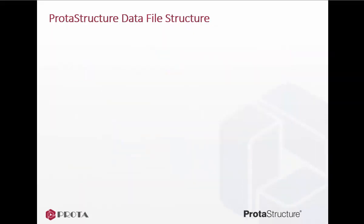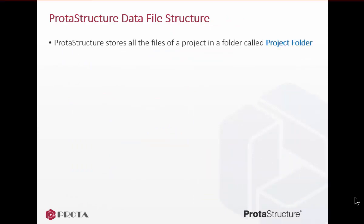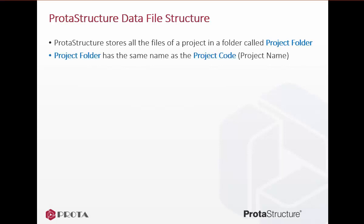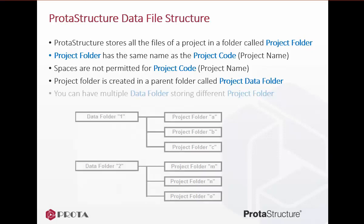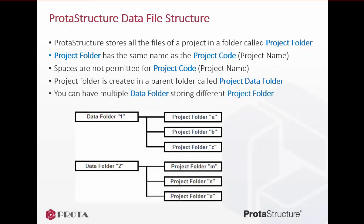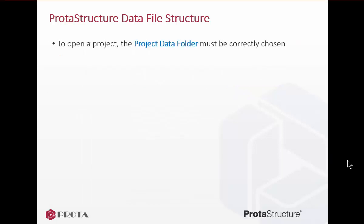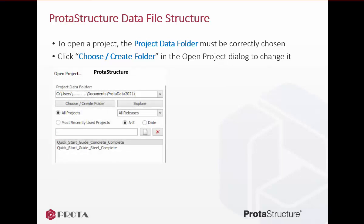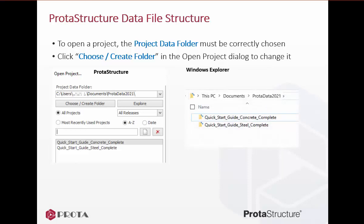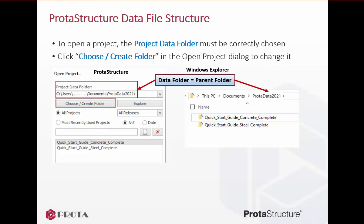Let's go through how ProtoStructure manages the model data and files. ProtoStructure stores all the files of a project in a folder called the project folder. The project folder has the same name as the project code, which is the project name — spaces are not permitted for the project code. The project folder is created in a parent folder called the project data folder. You can have multiple data folders storing different project folders. Tip: if you are a new user, for simplicity, use just one data folder for all projects. To open a project, the project data folder must be correctly chosen — click 'Choose/Create Folder' in the Open Project dialogue to change the project data folder.